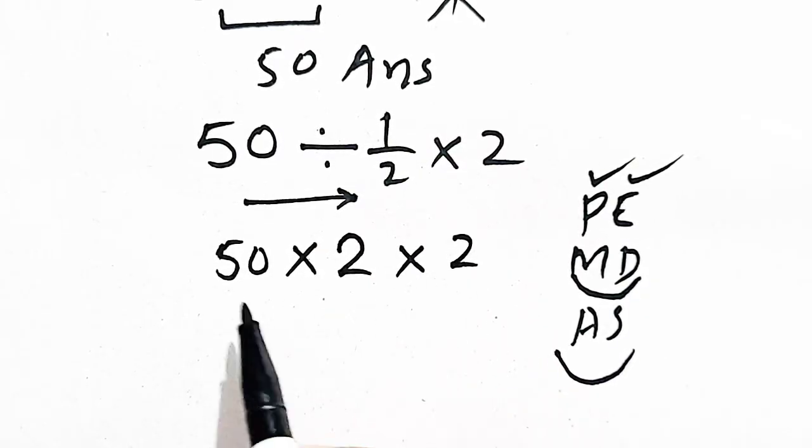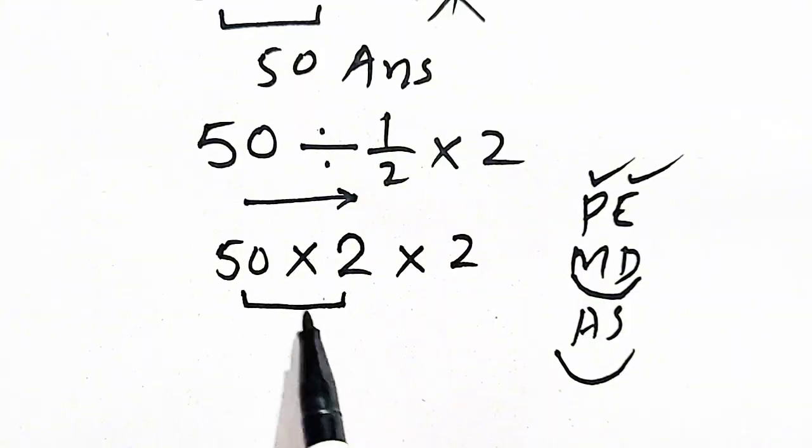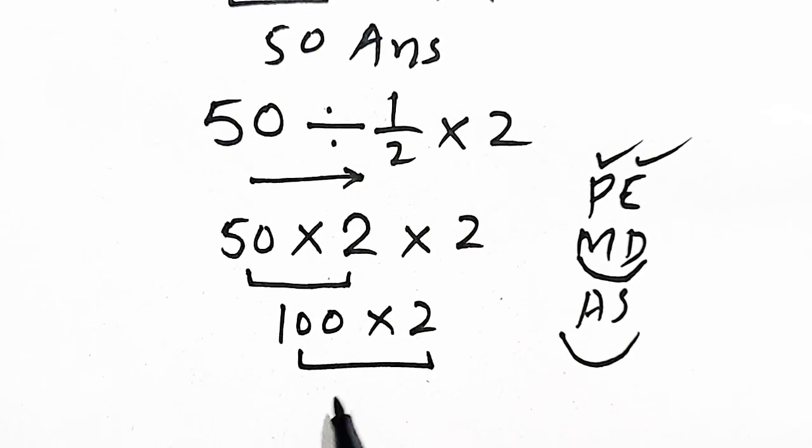So we will get 50 divided by half is converted into multiplication and 1 by 2 is flipped to get 2 times 2. So 50 times 2 will be equal to 100 times 2. So our final answer will be equal to 200.